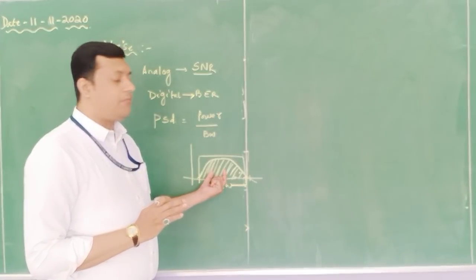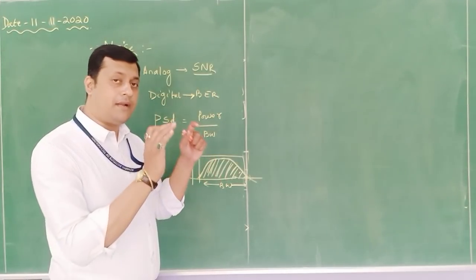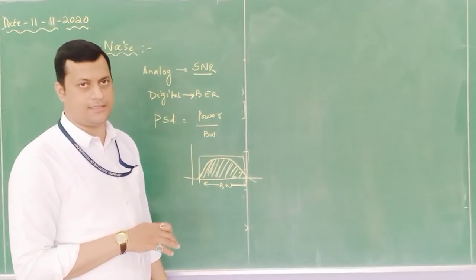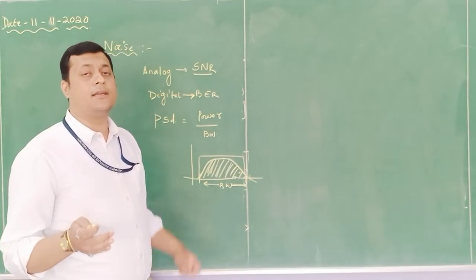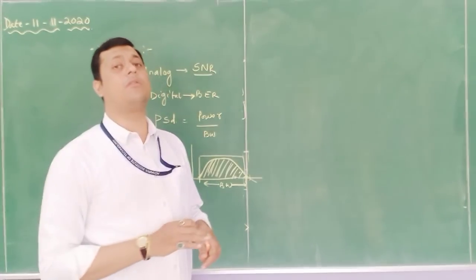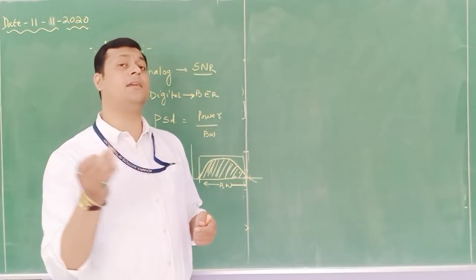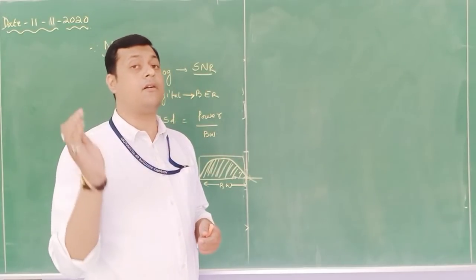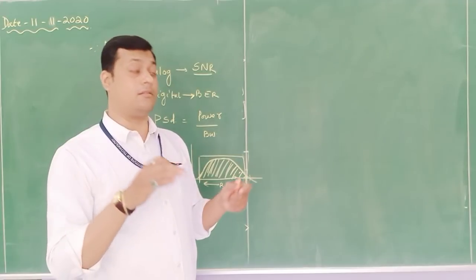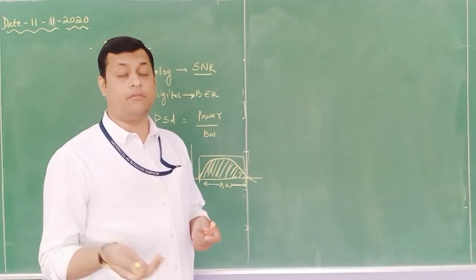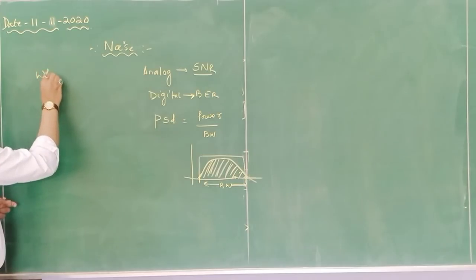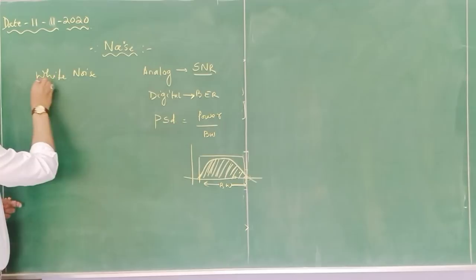In this particular spectrum or bandwidth, there is power availability, and power divided by bandwidth gives you power spectral density. Noise — also called white noise or additive white Gaussian noise — is distributed uniformly throughout the spectrum. It depends upon the nature of the communication system and the modulation technique. This white noise is distributed throughout the entire spectrum.